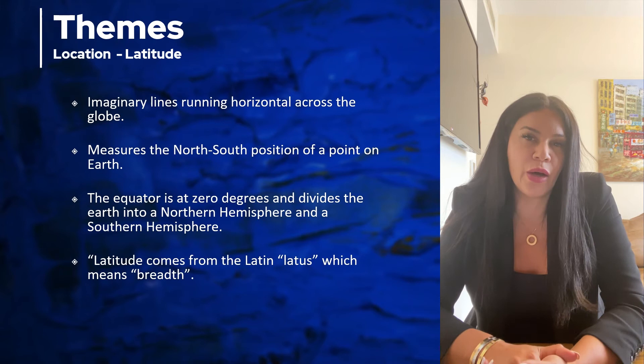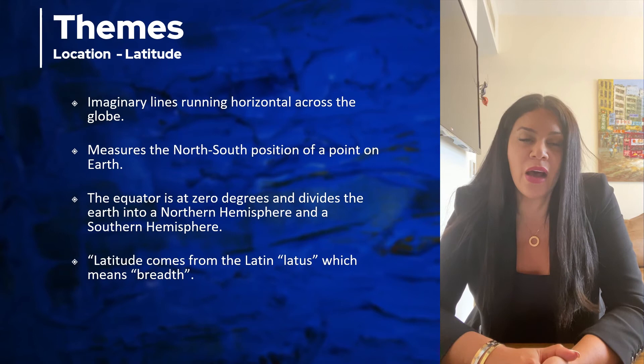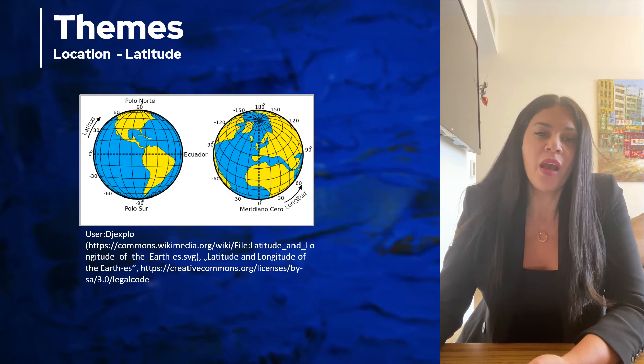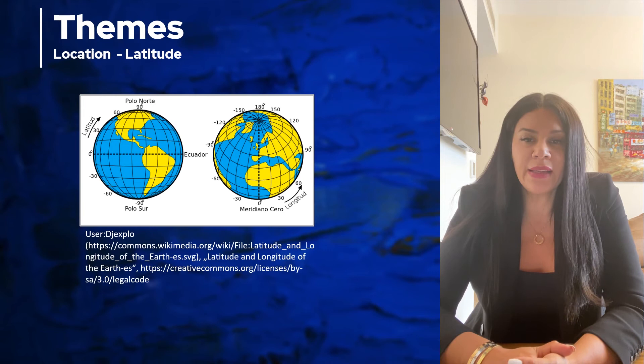The equator runs through the middle of the earth and divides the earth into a northern hemisphere and a southern hemisphere. If you are north of the equator, you are in the northern hemisphere; if you are south of the equator, you are in the southern hemisphere. How far you are from the equator is measured in degrees — from the equator at zero degrees, to the north pole at 90 degrees north, and to the south pole at 90 degrees south.